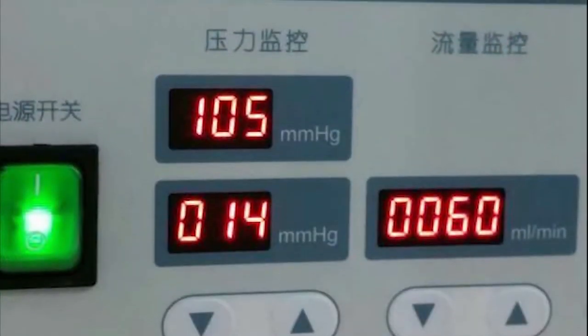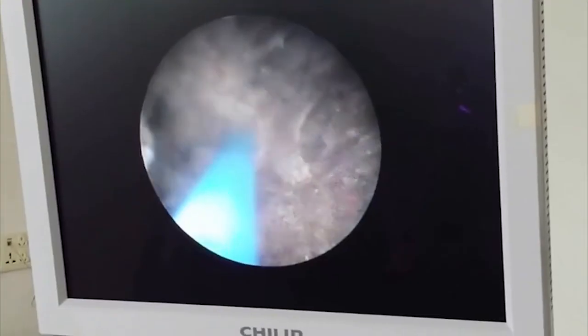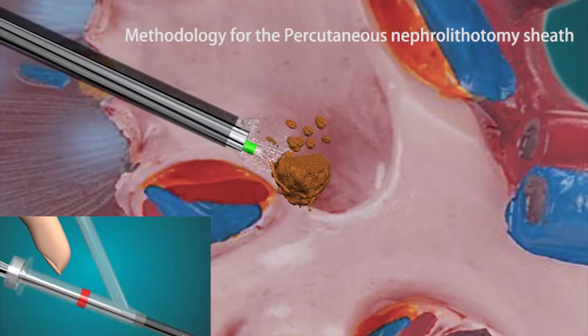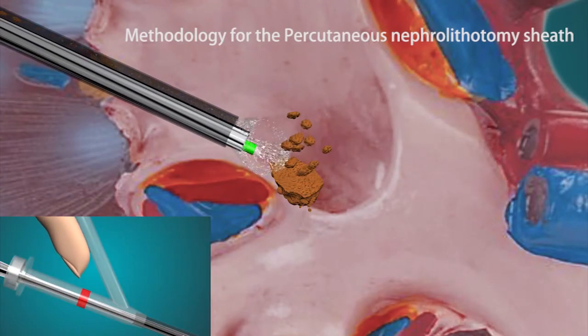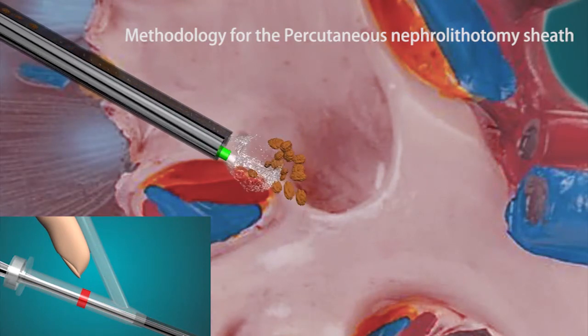Commence lithotripsy using holmium laser. The negative aspiration pressure can be adjusted using the pressure vent. The small stone fragments will exit in the space between the scope and the sheath.